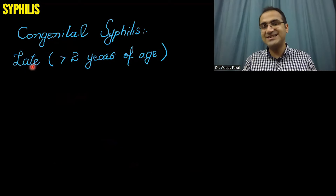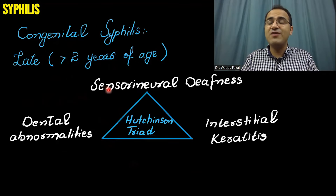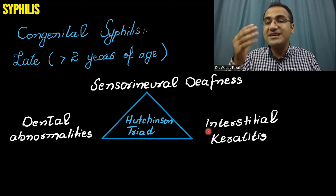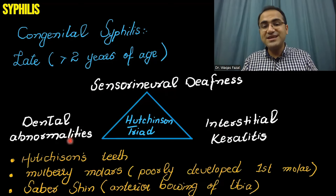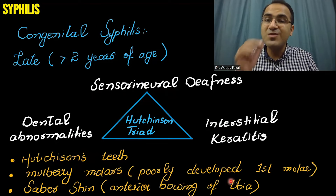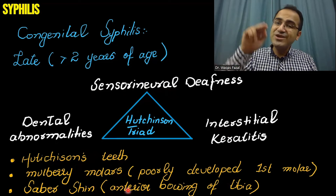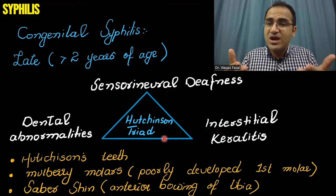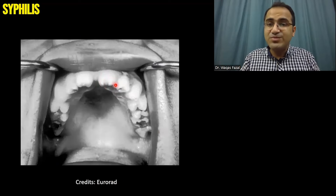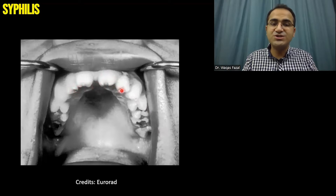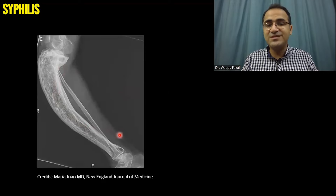In late congenital syphilis — after two years of age — the patient starts to develop infection with sensorineural deficit, sensorineural deafness, and inflammation of the cornea called interstitial keratitis. There are also dental abnormalities, including Hutchinson teeth — notched teeth with a notch in the middle — and mulberry molars, which are poorly developed first molars. Other features include saber shins, which is anterior bowing of the tibia. This constellation is called the Hutchinson triad: sensorineural deficit, interstitial keratitis, and dental abnormalities. These pictures show Hutchinson teeth and saber shins in congenital syphilis.